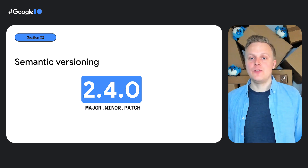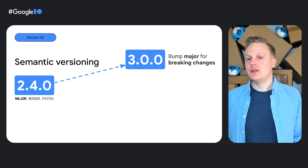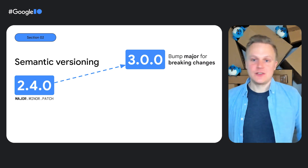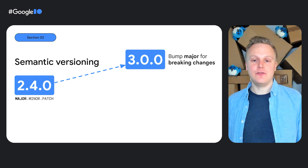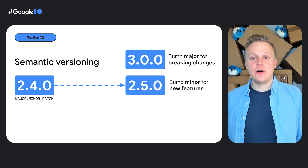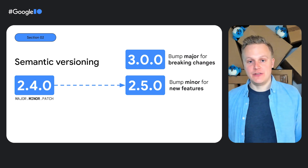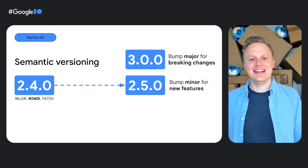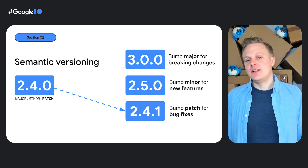You normally start from version 1.0.0 as the first stable version. When publishing new versions of a package, you increase the major version when doing a breaking change in the API — for example, removing a function or a class, or completely changing the behavior of a function or a class. If you're only adding new functionality, you do a minor version increase, for example adding a class or a function. And if you're only fixing bugs and not changing the API, you can settle on increasing the patch version.